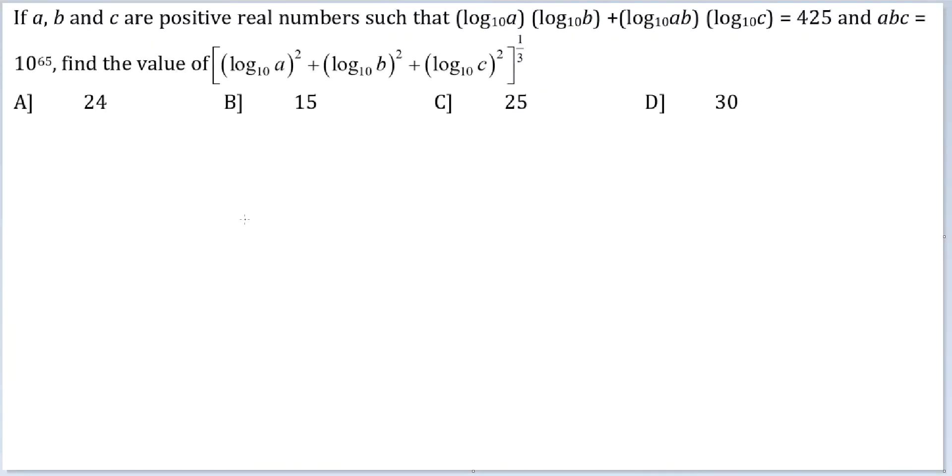Let's look at this question. If a, b, and c are positive real numbers such that (log a)(log b) + (log ab)(log c) is equal to 425 and abc is equal to 10 raised by 65.